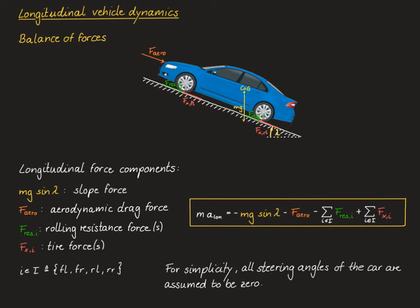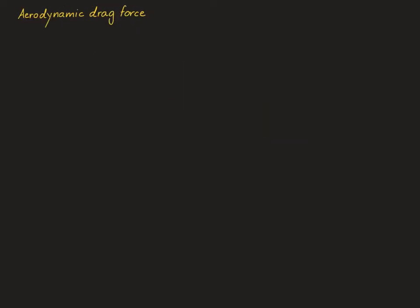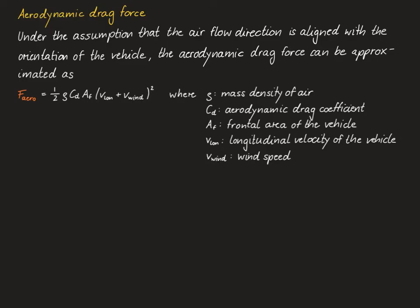As the slope force is pretty much self-explanatory, let's begin with the aerodynamic drag force. Under the assumption that the airflow direction is aligned with the orientation of the vehicle, meaning that air only flows in the longitudinal direction of the vehicle, the aerodynamic drag force can be approximated by this formula. Assuming for a moment that the wind speed is zero, you can see from this formula that the aerodynamic drag force increases quadratically with the longitudinal speed of the vehicle.